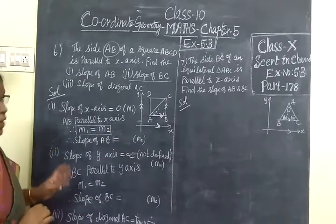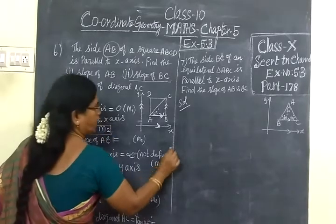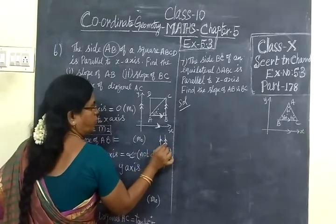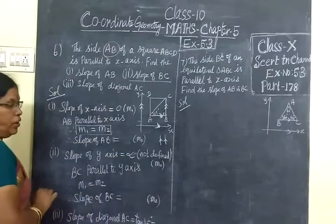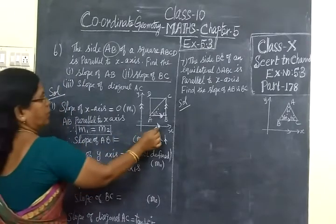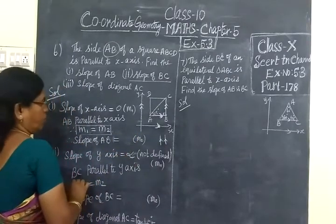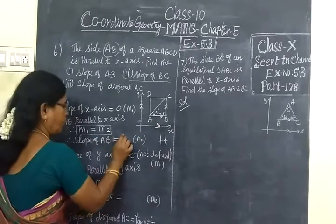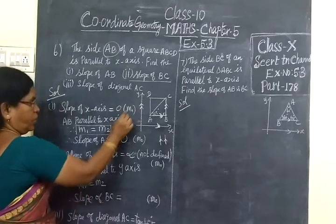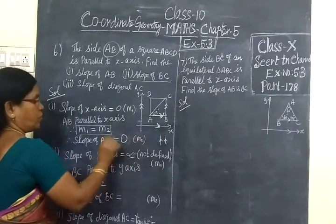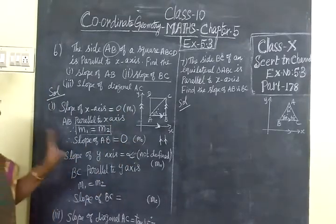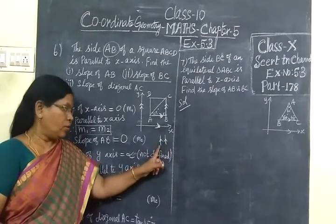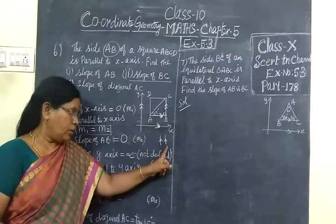If two lines are parallel, the slope of X axis is 0. AB is parallel to X axis. So slope of AB is 0. So M1 is 0. M2 is also 0. So condition is two lines are parallel. If two lines are parallel, the slope is equal.